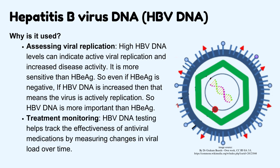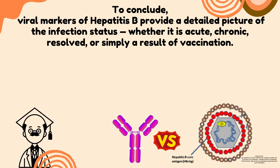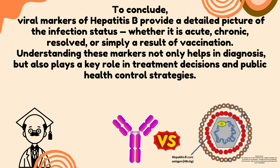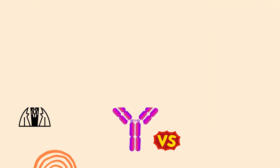HBV DNA testing helps track the effectiveness of antiviral medications by measuring changes in viral load over time. To conclude, viral markers of hepatitis B provide a detailed picture of the infection status — whether it is acute, chronic, resolved, or simply a result of vaccination. Understanding these markers not only helps in diagnosis but also plays a key role in treatment decisions and public health control strategies. Thank you for your attention.